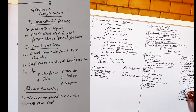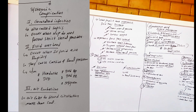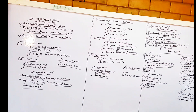The third systemic complication is air embolism. Air embolism means the entry of air into the systemic circulation — more than 5 mL of air entering the systemic circulation is considered a dangerous air embolism.